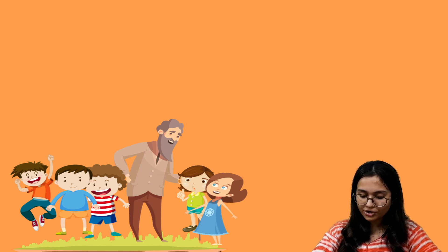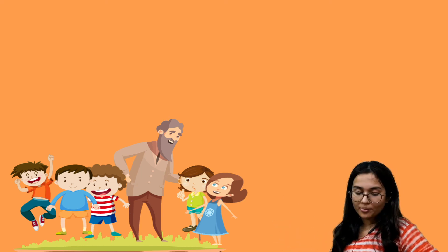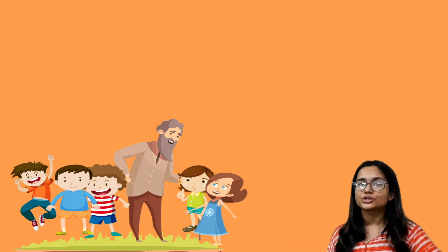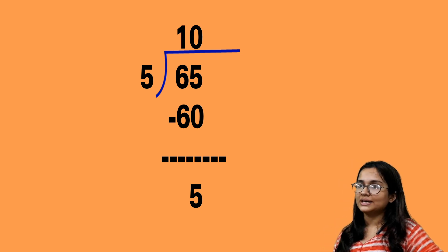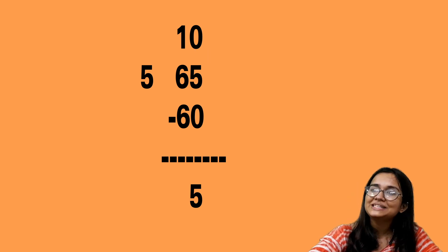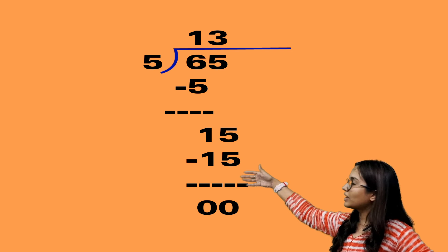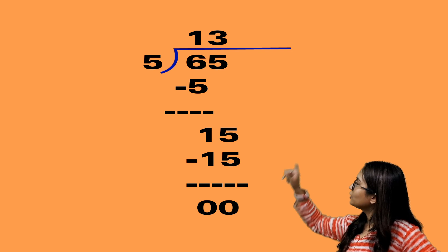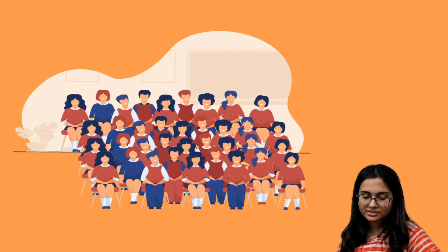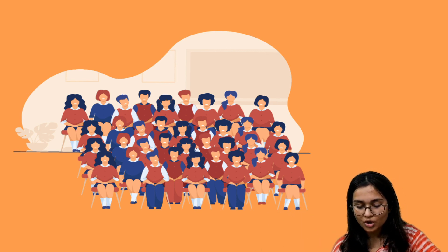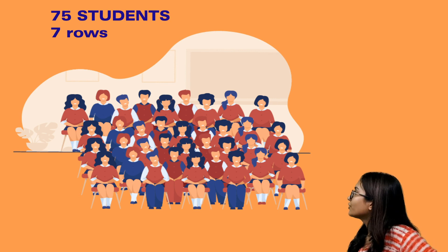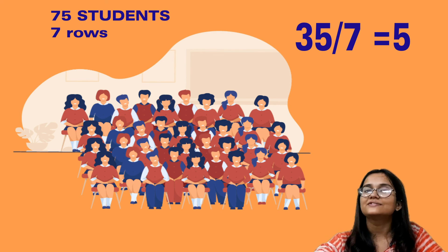Then you'll have division questions — both story problems and numerical problems. For example, 65 divided by 5: 5 ones are 5, and 6 minus 5 gives 1; bring down 5 to get 15, and 5 threes are 15. So the answer is 13. For a story problem: there are 35 students in 7 rows with the same number of students each. Dividing 35 by 7, the answer is 5 — so 5 students in each row.